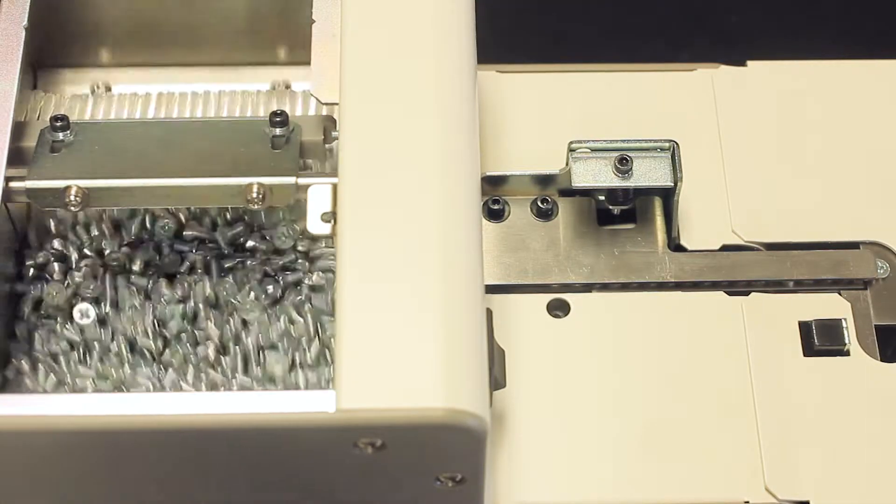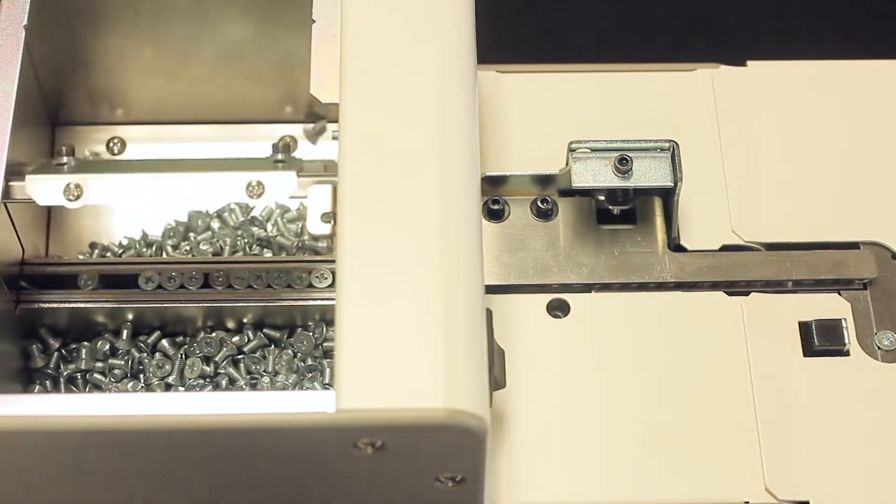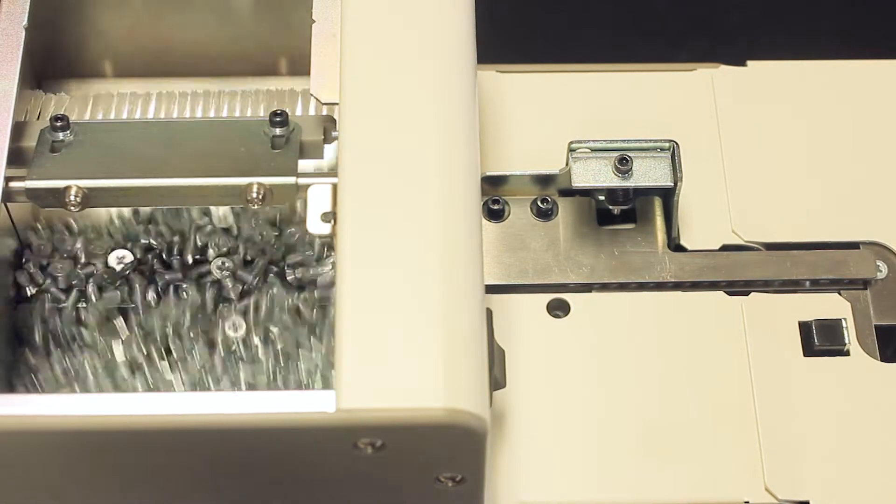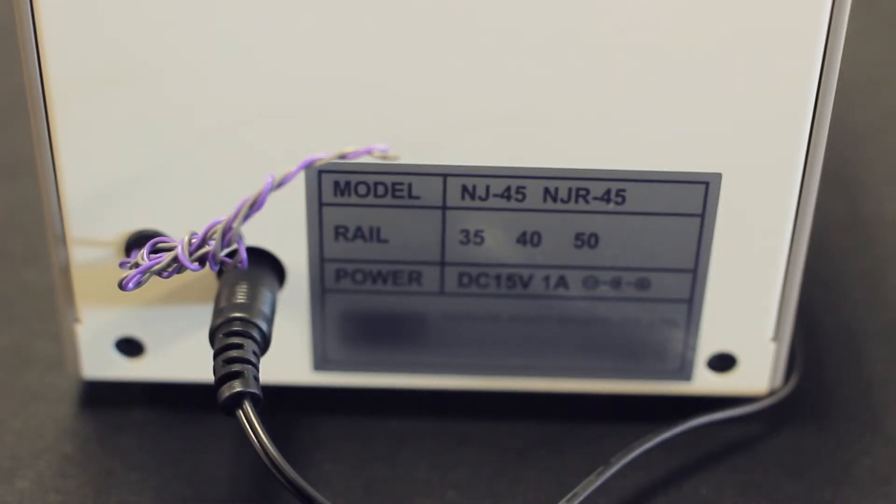The NJL is a presenter that can accommodate screws with a max length of 25 millimeters and the NJR is for robotic applications.